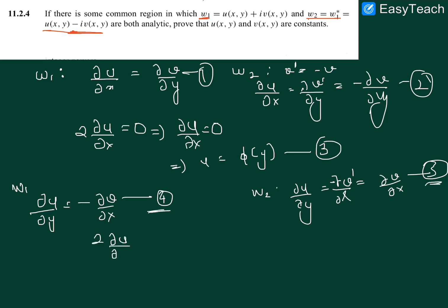Now we add 4 and 5, we get 2 du by dy equals to 0, implies du by dy equals to 0, that implies u is some function of x.